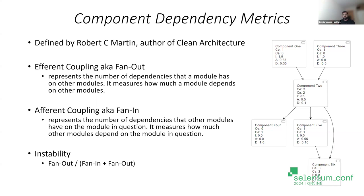The service has a dependency on repositories and domain objects — these are outgoing or efferent dependencies. Afferent coupling represents the number of dependencies that other modules have on the module in question — incoming dependencies. Looking at the diagram: component one and three each have an efferent coupling of one because they depend on component two. Component two has an efferent coupling (Ce) of three — it has outgoing dependencies to components four, five, and six. And its afferent coupling (Ca) is two, because two components at the top depend on it.